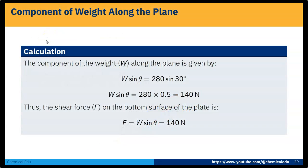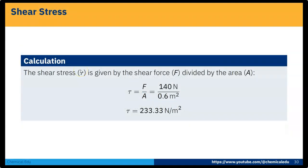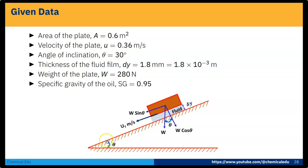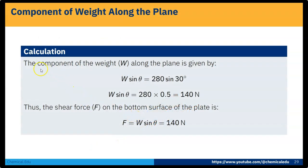First we have to decompose the weight. The weight is acting vertically downward. If we decompose this force, we get W cos θ and W sin θ, where W sin θ is the component acting along the plane in the downward direction. So the component of weight along the plane is W sin θ = 280 × sin 30° = 140 N. This is actually the shear force F acting on the bottom surface of the plate.